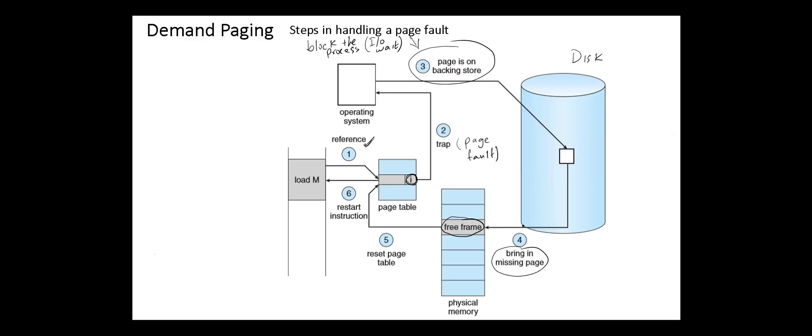When the I/O operation is complete by bringing the required page and storing it in the free frame, the process page table should be updated with the new frame number and the valid-invalid bit is changed to indicate that this is now a valid page reference. The instruction that caused the page fault must now be restarted from the beginning, and this is done as soon as the process gets another turn on the CPU.